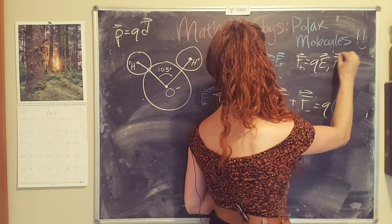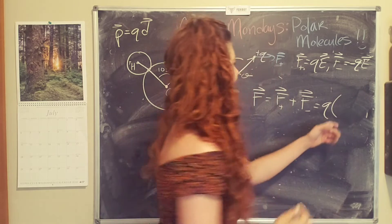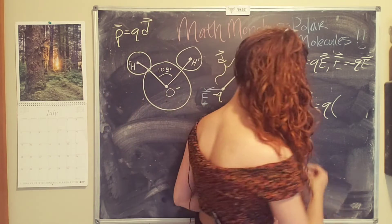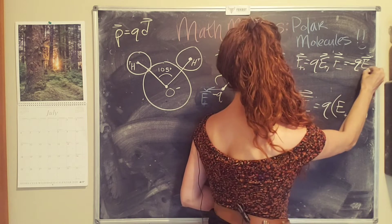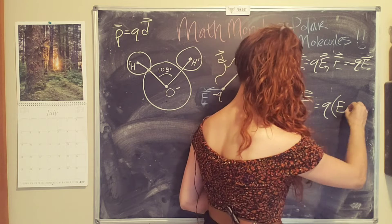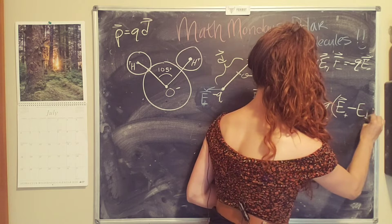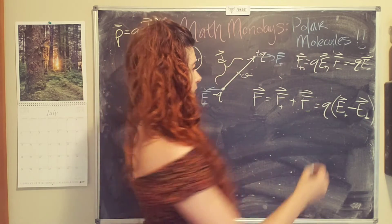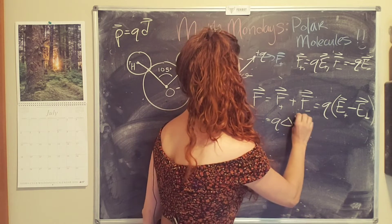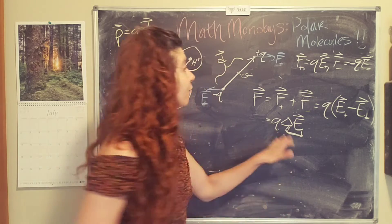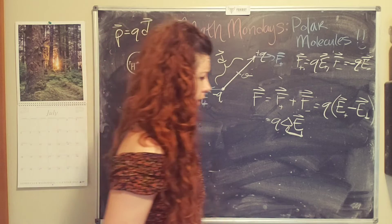So F negative equals negative QE. So we can pull Q out because it's a constant and it's the same and we end up with E positive, I guess I should state that's what's going to be different here. E positive minus the electric field on the negative charges. And so we can simplify this and say Q delta E where this is the difference in the electric field between the positive vertex and the negative vertex.